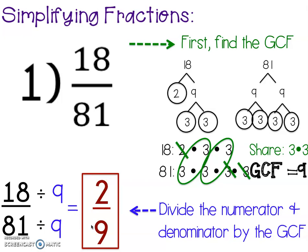When simplifying fractions using the GCF, first you need to show your GCF work. Then you divide the numerator and denominator by that GCF, and put a box around your final simplified fraction.